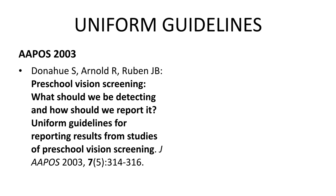A subcommittee of the Vision Screening Committee of the American Association for Pediatric Ophthalmology and Strabismus came up with a consensus set of guidelines on follow-up examination criteria of what amblyopia risk factors were to be sought. When the referral rate from those guidelines seemed unacceptably high, in 2013, an additional guideline for vision screening was published by APOS with age-stratified levels of amblyopia risk factors that were intended to decrease over-referral, especially of younger children.